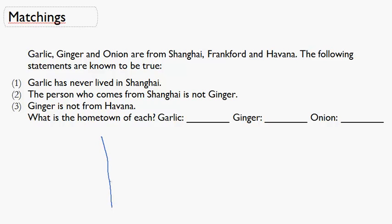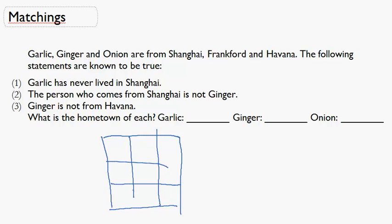One of the best ways to go about this is to draw a logic box. So what this means is that we'll put all the one categories on one side — so we have garlic, ginger, and onion — and we'll put the cities on the other side. So we have Shanghai (S), Frankfurt (F), and Havana (H).